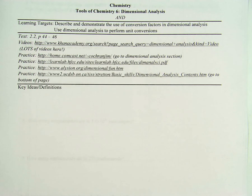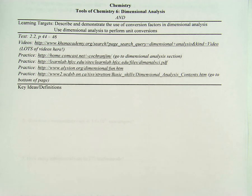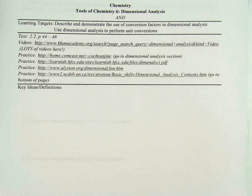The sixth video in the Tools of Chemistry unit is on Dimensional Analysis. Dimensional Analysis has several different names, though it's really just a problem-solving method. You might have heard it as Unit Label or Factor Label Method. Unit Analysis is another way to say it, because it's all about the units that we have on measurements and how we manipulate them.